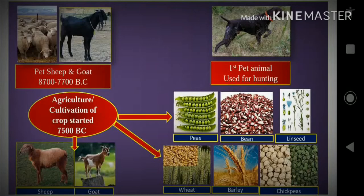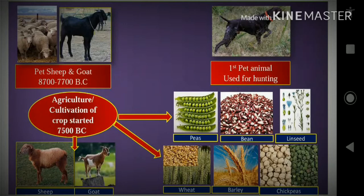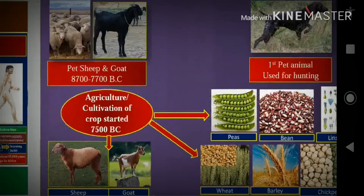Then come to agriculture or cultivation of crop. Cultivation of crop started in 7500 BC. In this agriculture, they included peas, bean, linseed, wheat, barley, and chickpeas as crops for cultivation. They also reared sheep and goat.